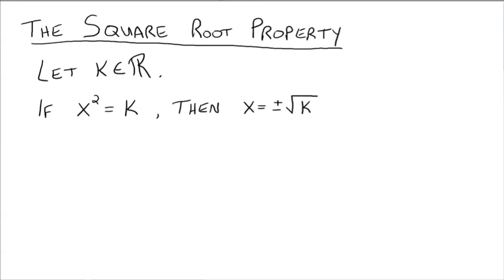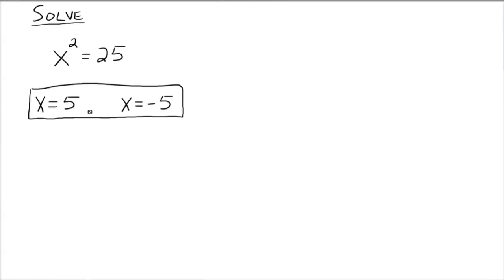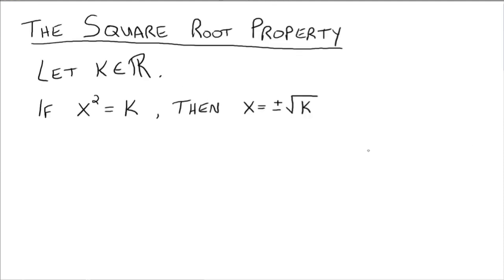Remember, we had two solutions: 5 and negative 5. So that's the most common error — we realize to take the square root of both sides because we have something squared equals a number, but we forget the plus or minus symbol that we need to put in there to denote that we have two solutions.